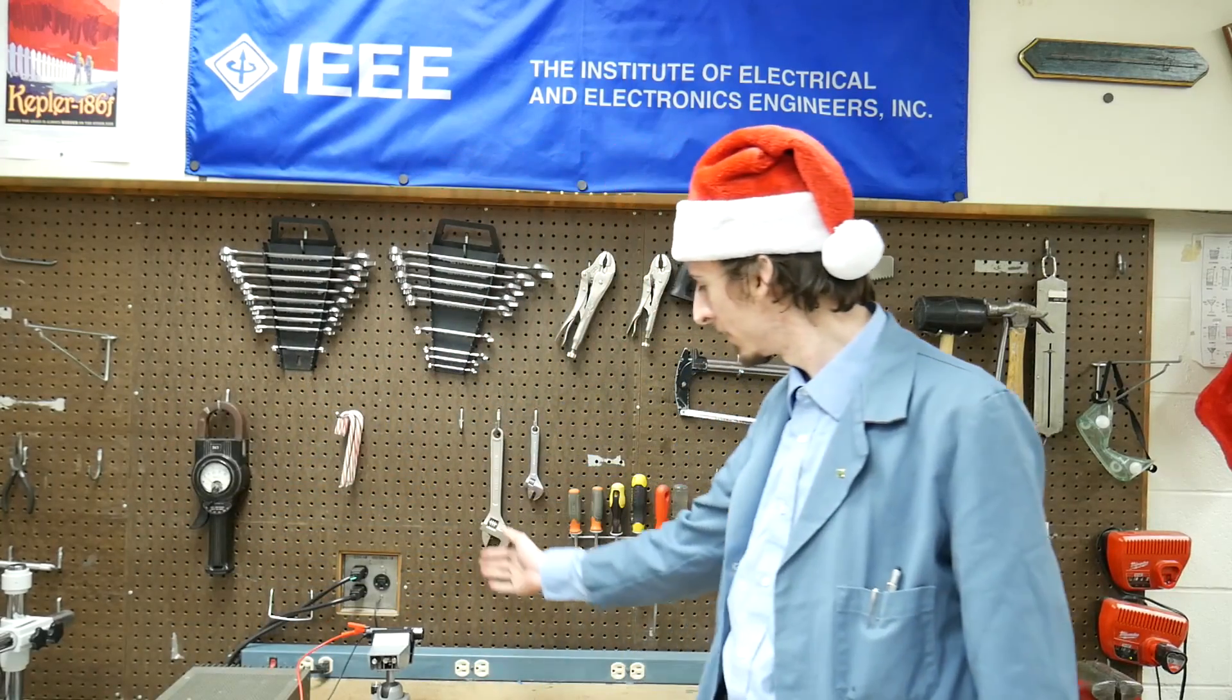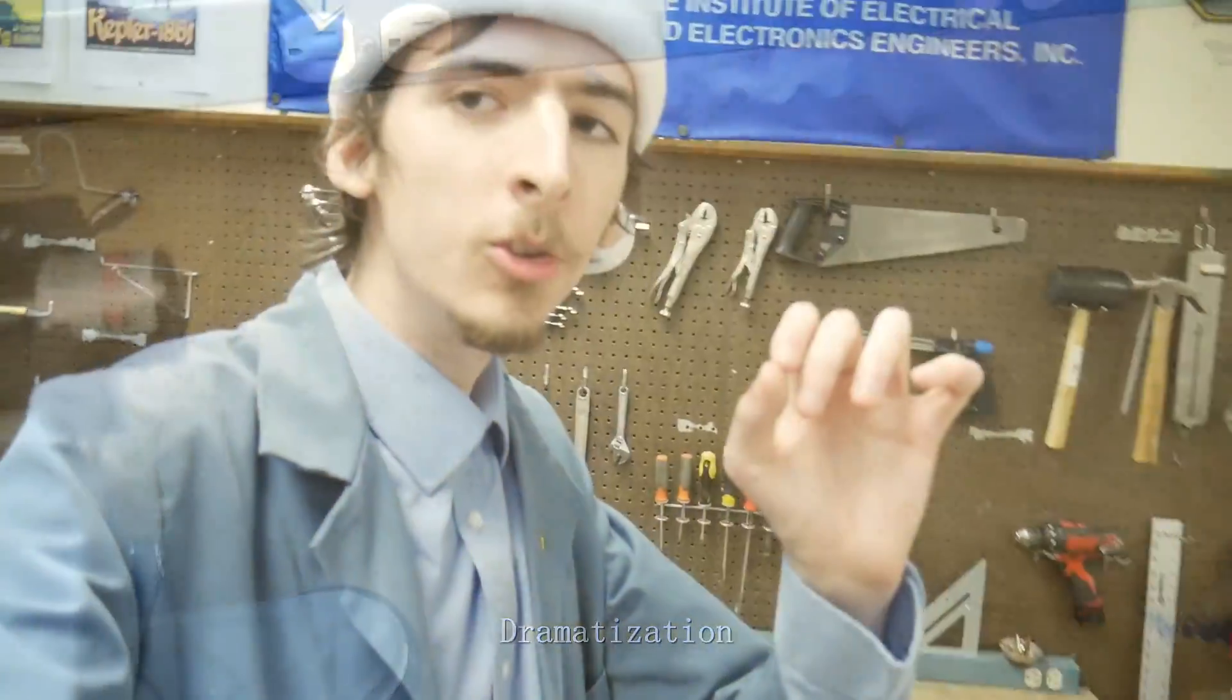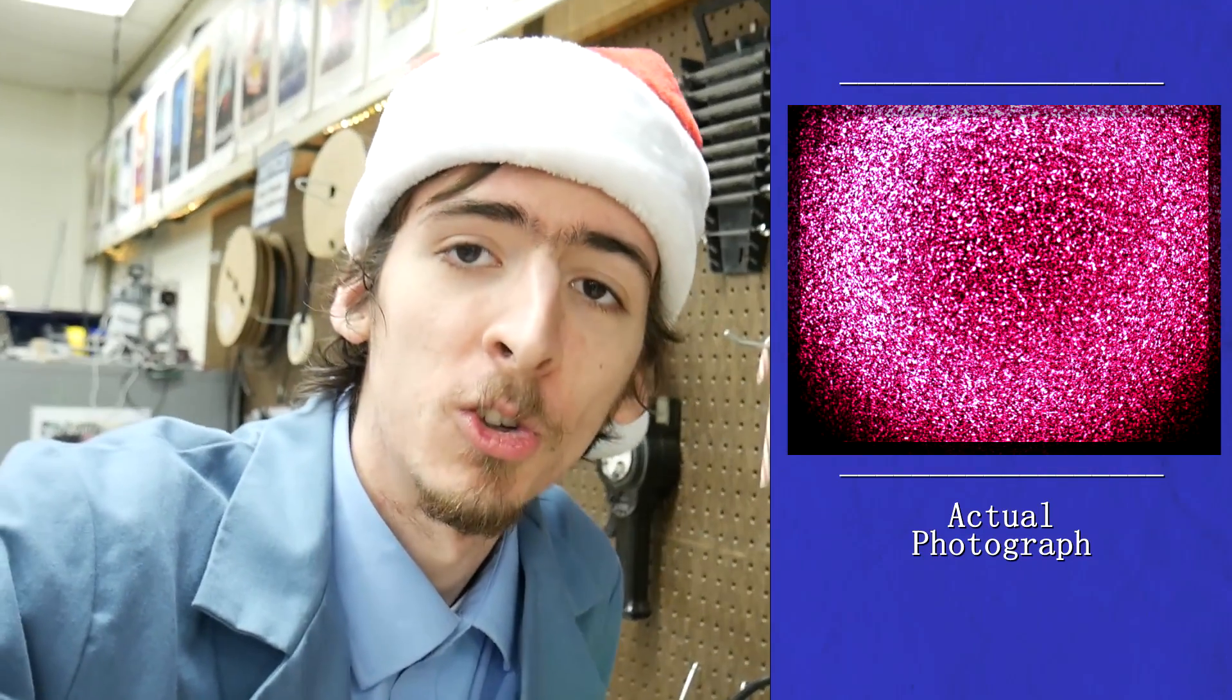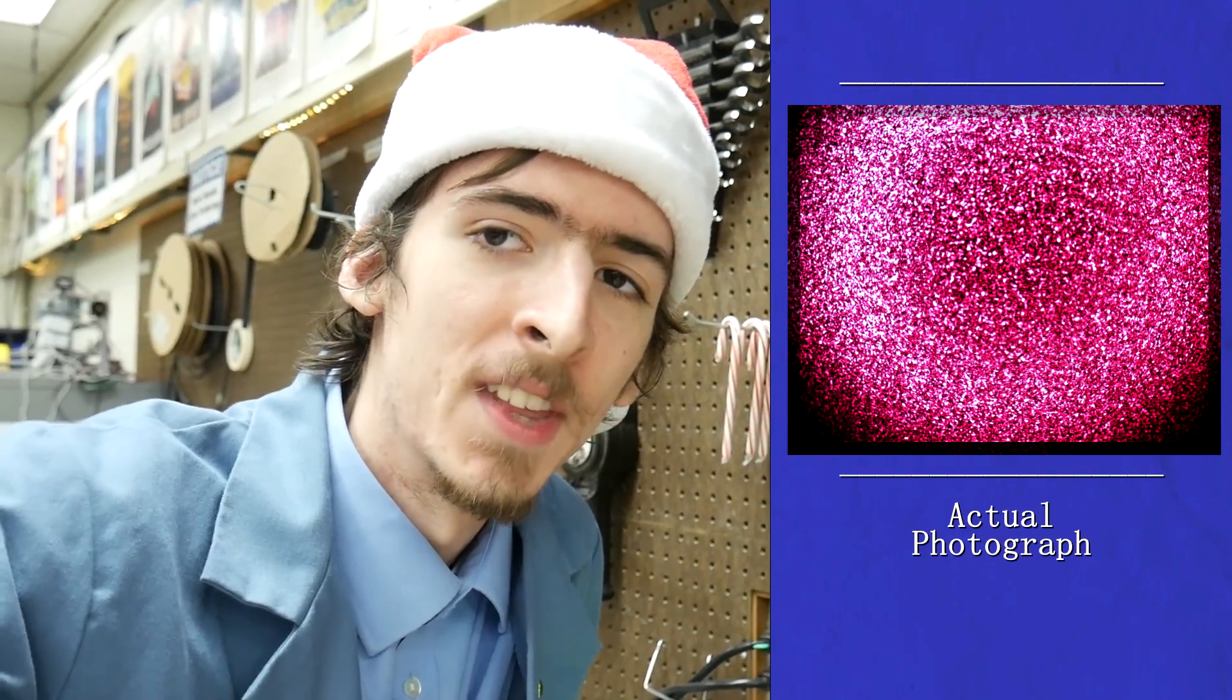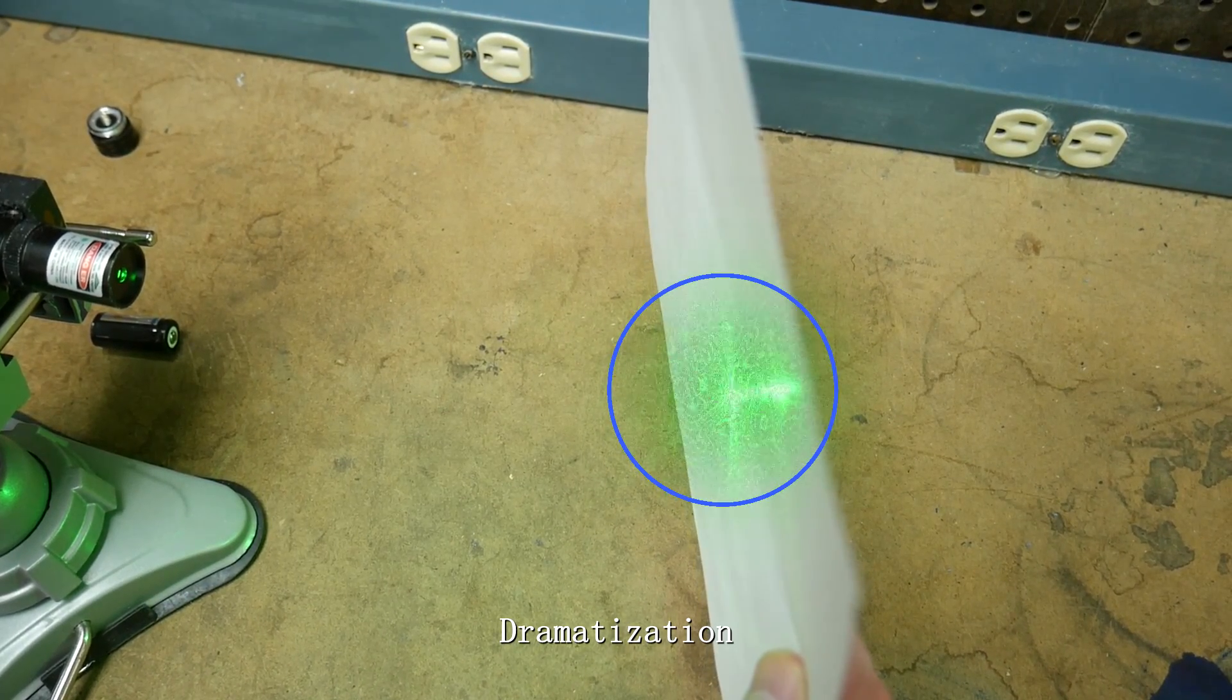Have you ever looked at a laser pointer and noticed that it looks a little bit different than normal light? Lasers seem to have a bit of a graininess to them, don't they? I've heard people describe it as a sort of glint or glimmer or even a sparkle. It seems to be stationary until our perspective shifts and, more mysterious yet, it also extends off the object and into open air.